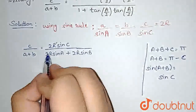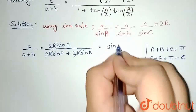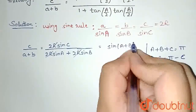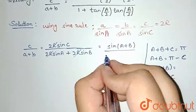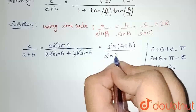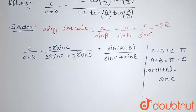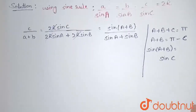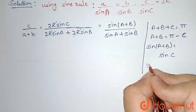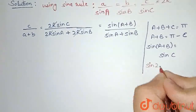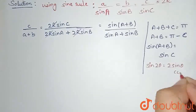2R cancels from all three terms. Instead of sinC, I can write sine(A + B), because in the RHS we only have A and B. In the denominator I have sinA + sinB. In the numerator, I can write sine 2θ as 2·sinθ·cosθ.